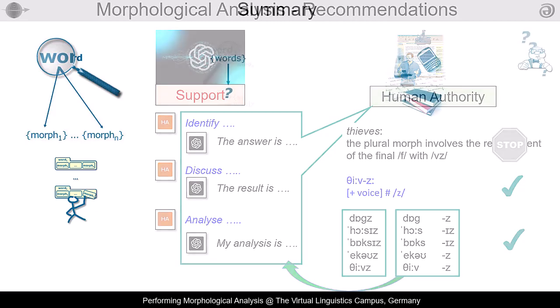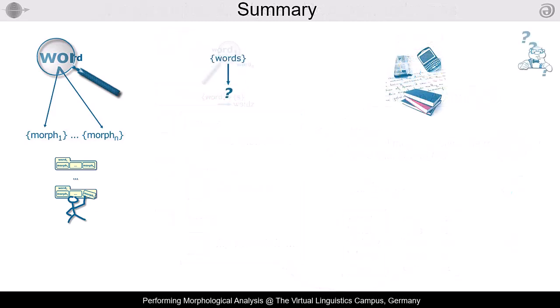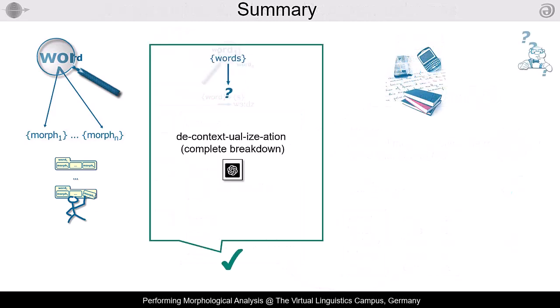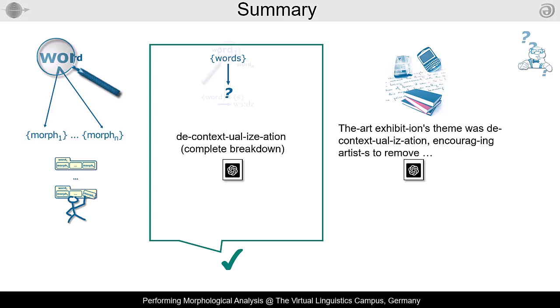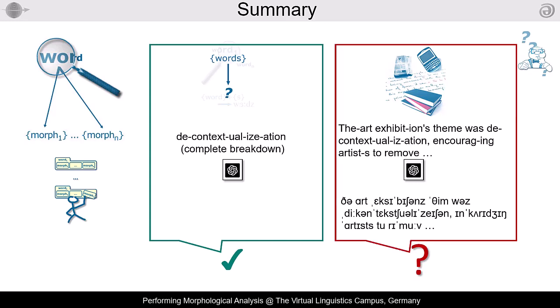Undoubtedly, ChatGPT is great when individual words have to be analyzed morphologically. However, the quality decreases with more detailed prompts. And as soon as complex text passages and phonemic data come in, the AI text generator should no longer be relied on. I hope these recommendations help.